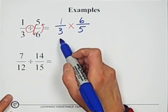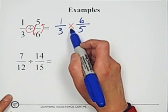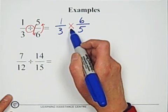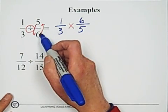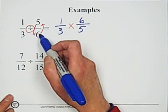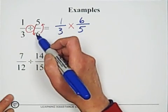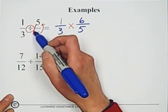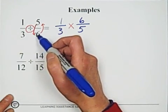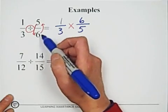Remember: write the first fraction, change the division to multiplication, and at the same time invert the second fraction — six to the top, five to the bottom — inverting the numerator and denominator.